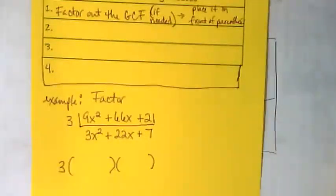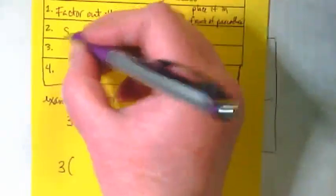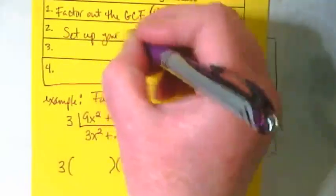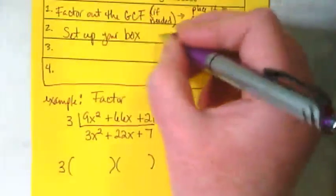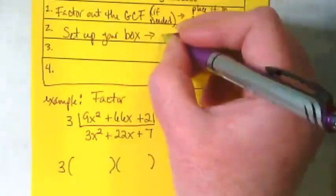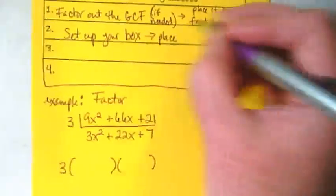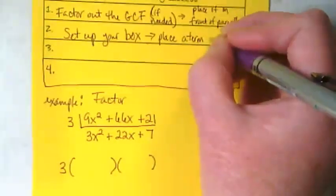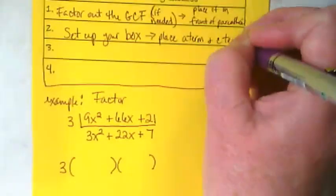Because the x puzzle isn't helpful here, instead we're going to use a box. So our step 2 is to set up our box, and you want to place your A term and your C term in the box.